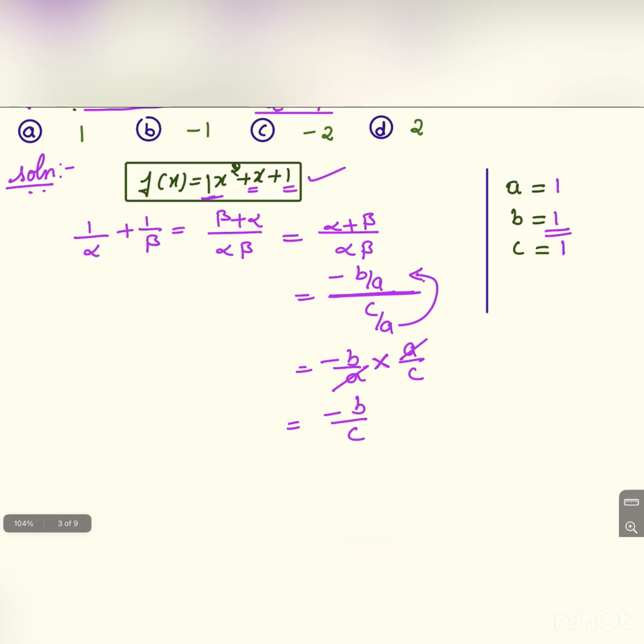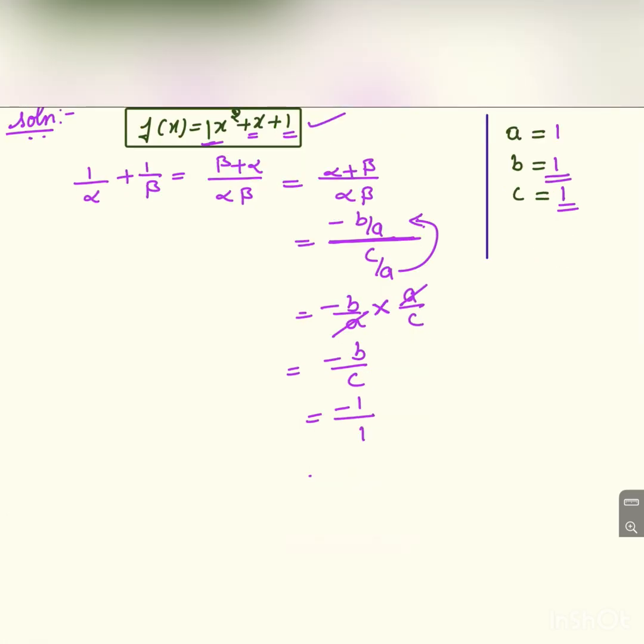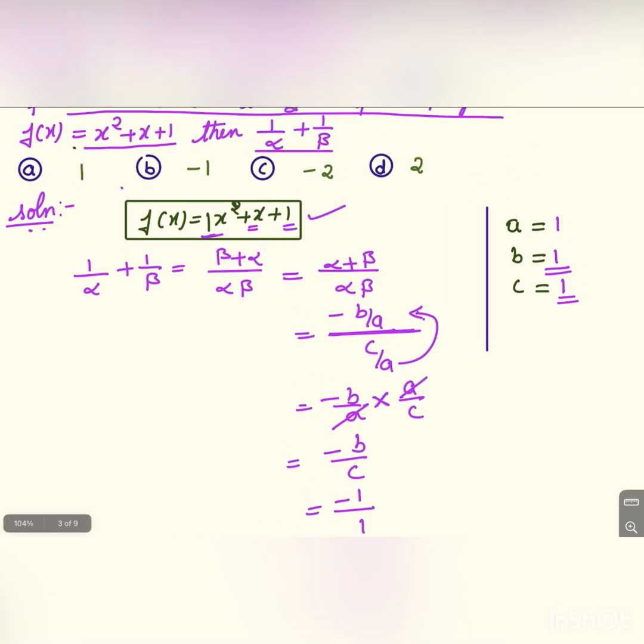Now b = 1 and c = 1. Let us substitute these values. -1 ÷ 1 = -1. Therefore, 1/α + 1/β = -1, and the answer is option b.